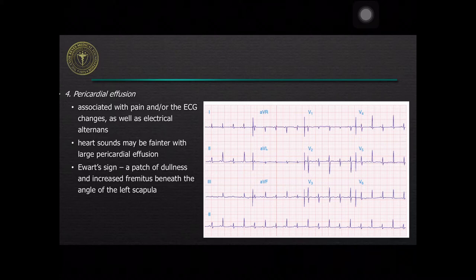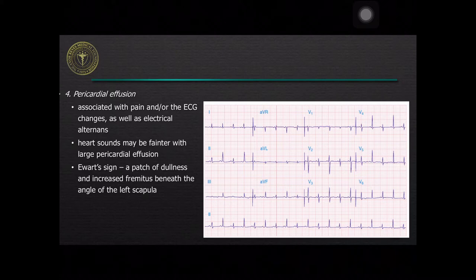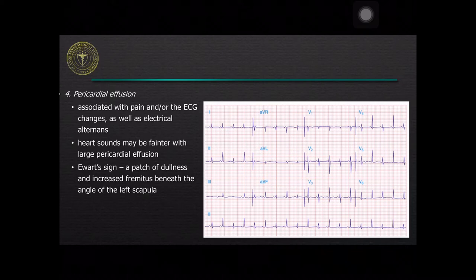Pericardial effusion is associated with pain and/or ECG changes as well as electrical alternans. Electrical alternans is due to the movement of the heart towards the anterior chest wall producing the large QRS complex. Heart sounds may be fainter with large pericardial effusion. On physical examination, a patch of dullness and increased fremitus beneath the angle of the left scapula can be appreciated — this is known as the Ewart sign.